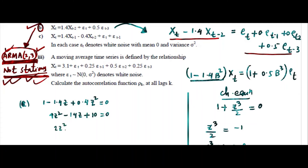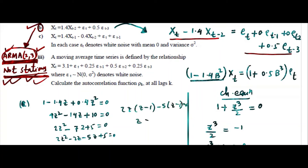So we get 2z squared minus 2z minus 5z plus 5 equals 0. Taking 2z common: z minus 1. Then taking minus 5 common: z minus 1. So we have a unit root — z equals 1, and z equals 5/2. These kinds of cases fit into ARIMA.